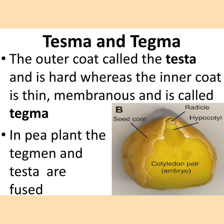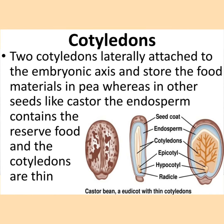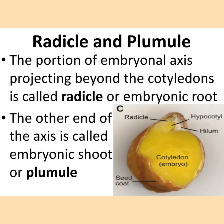In the image you can see the peeled seed coat showing the tegmen and testa fused together, and below them the radicle and hypocotyl with the cotyledon pair — two cotyledons laterally attached to the embryonic axis storing food materials. In pea, food is stored in cotyledons, whereas in other seeds like castor the endosperm contains the reserve food and the cotyledons are very thin. The image shows thin cotyledons around the embryo with the seed coat, endosperm, epicotyl, hypocotyl, and radicle.